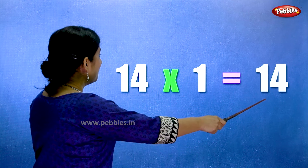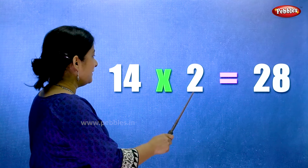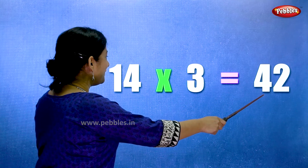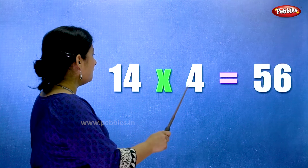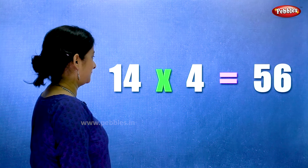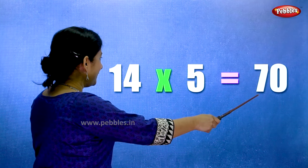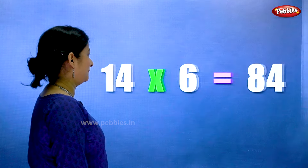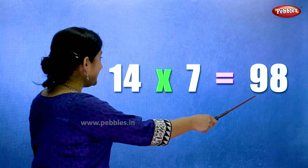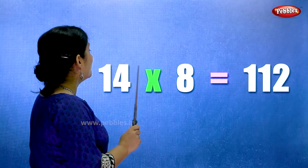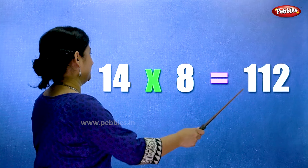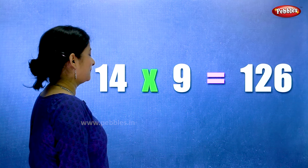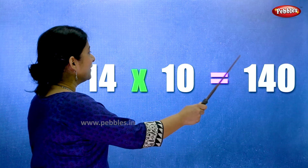Fourteen ones are fourteen. Fourteen twos are twenty-eight. Fourteen threes are forty-two. Fourteen fours are fifty-six. Fourteen fives are seventy. Fourteen sixes are eighty-four. Fourteen sevens are ninety-eight. Fourteen eights are hundred and twelve. Fourteen nines are hundred and twenty-six. Fourteen tens are hundred and forty.